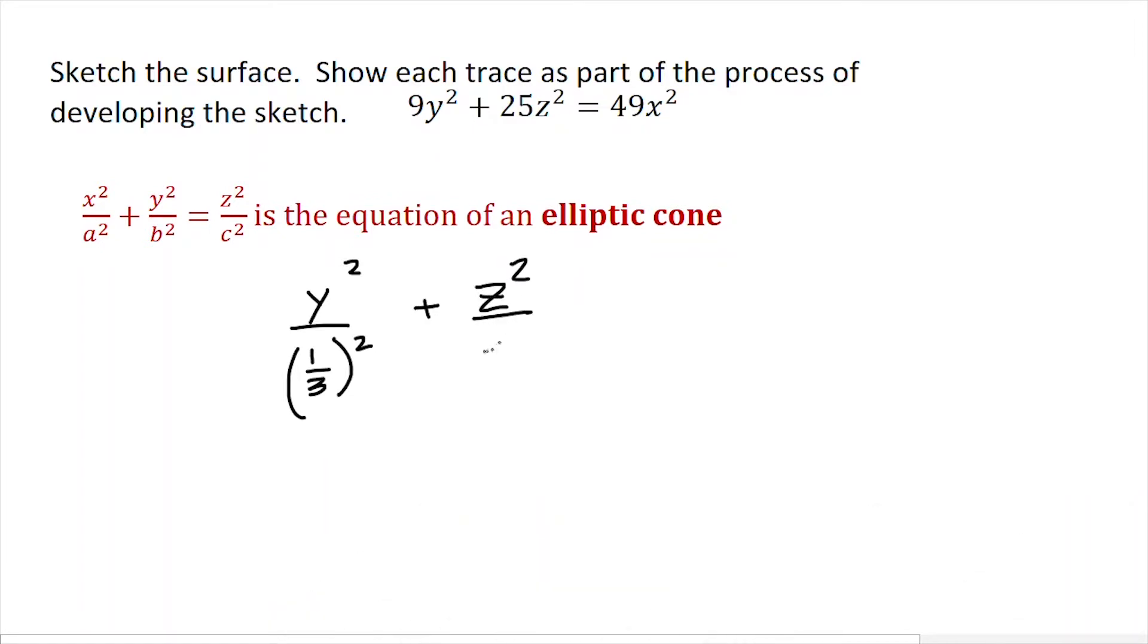That's going to be over (1/5)² equals x² over (1/7)². I can clearly see the pattern from the standard equation of an elliptic cone.